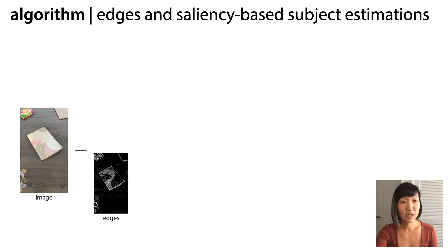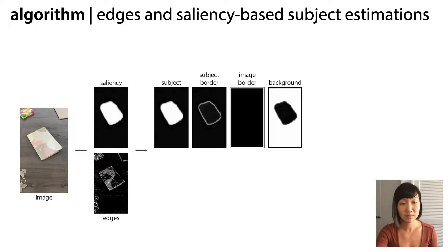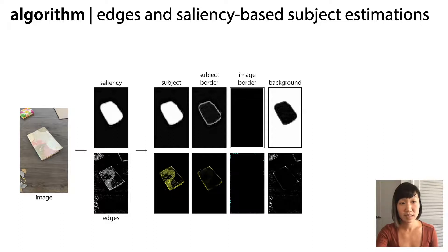Given an image, our tool detects edges throughout the image. However, we want to focus on edges related to subject-background separation and image border flicker. In particular, we need to identify a border around the subject. We realized we could estimate the image subjects using object-based saliency maps. So given this saliency map, we segment the image into regions describing the subject, subject border, image border, and remaining background. These segmentations are used to classify and color-code the edges.